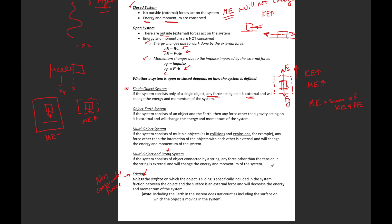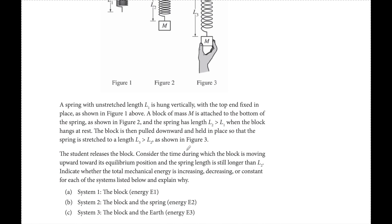Now let's go back to parts A, B, and C and see if this sheet helps us answer these questions. The student releases the block. Consider the time during which the block is moving upward to its equilibrium position while the spring length is still lower than L2. In all three scenarios, the object is accelerating upward due to the restoring force of the spring. The motion is upward — that's important for determining positive or negative work.